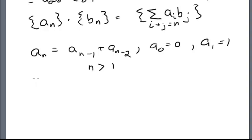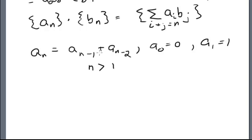So what I want to do with generating functions is solve recurrence relations such as this. This is a famous one — the solution is the Fibonacci sequence. The problem is that a sub n, a sub n minus 1, a sub n minus 2, 0 and 1 are all complex numbers, and no matter how much I manipulate them algebraically, I can't get a sequence out of it.